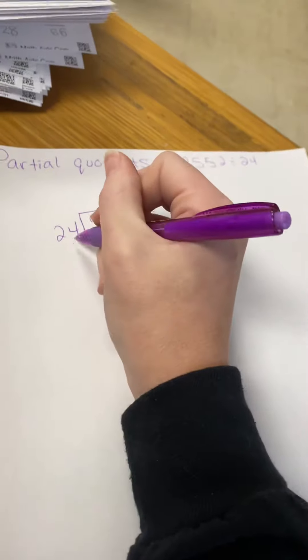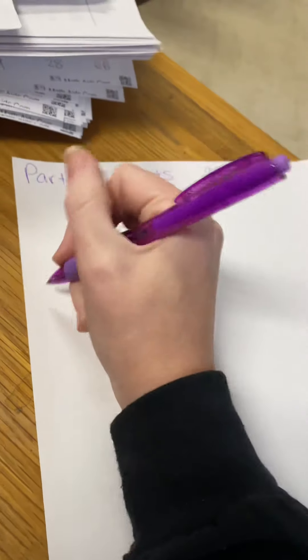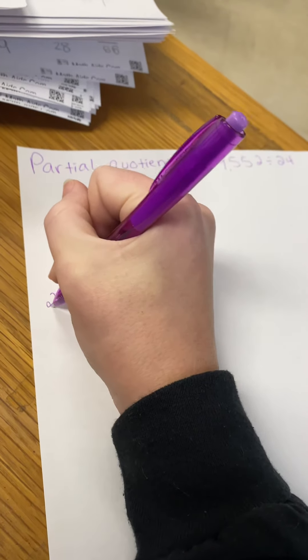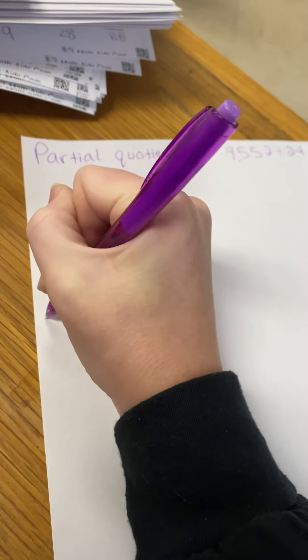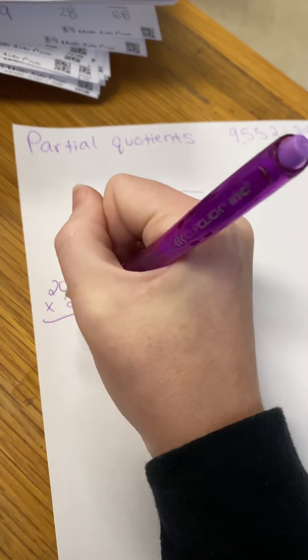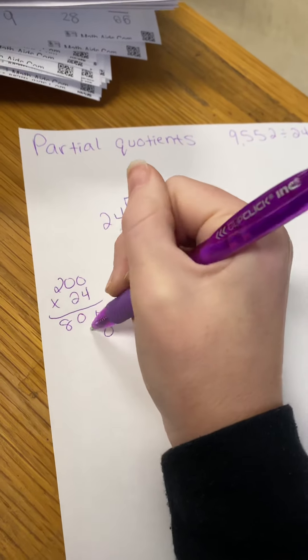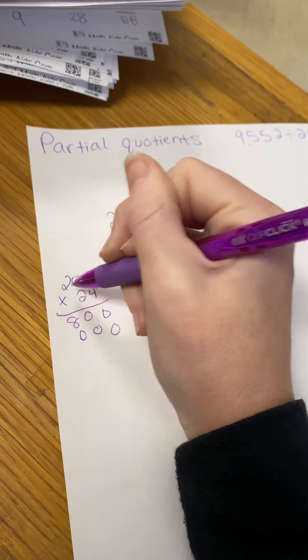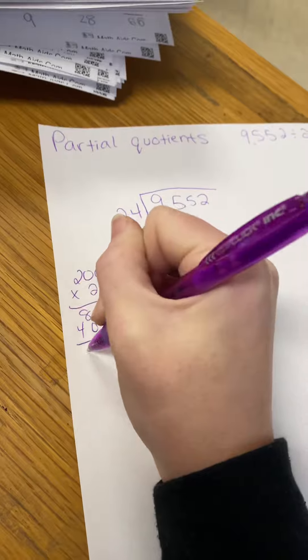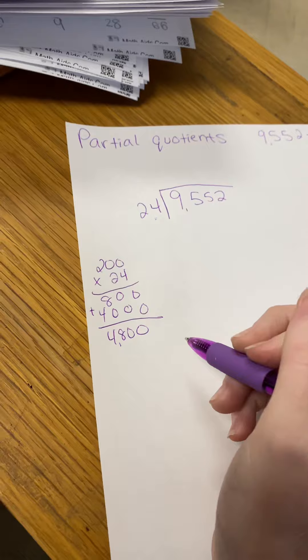We are going to try to take numbers, multiply them by 24 until we get close to that. This is a trial and error type of thing, so I tell the kids it's okay if you don't get it right the first time. 0 times 4, 0 times 4, 4 times 2, placeholder, 2 times 0, 2 times 0, 2 times 2 is 4. Then you add these together, so you get 4,800.